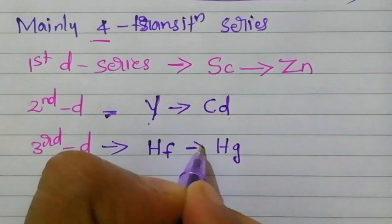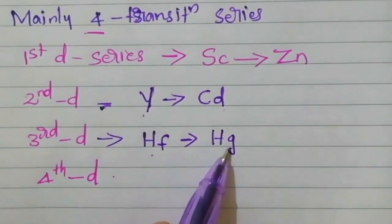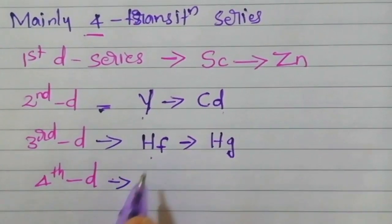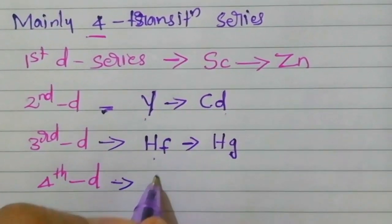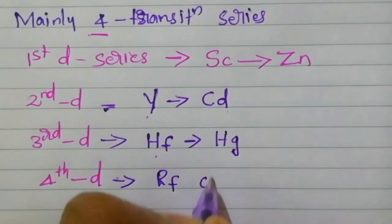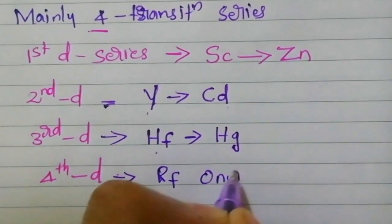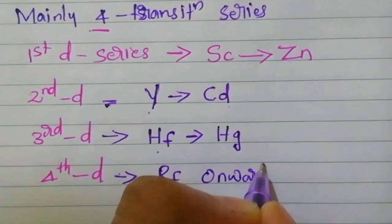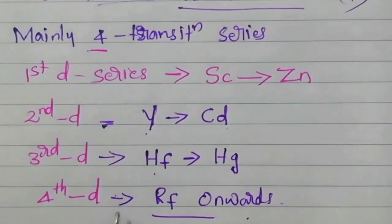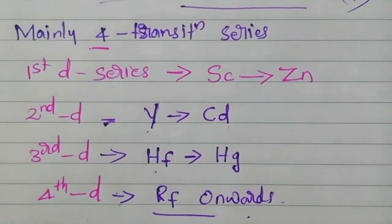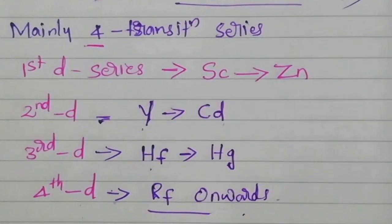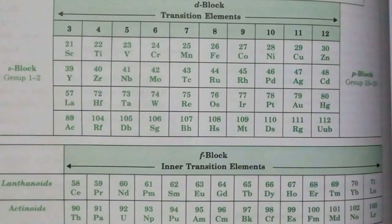The third D series ranges from hafnium to mercury. Now the fourth D series — its starting element is rutherfordium (Rf), and the fourth D series is an incomplete series. Some of the elements were not given a proper IUPAC name, so rutherfordium onwards we consider the fourth D series.